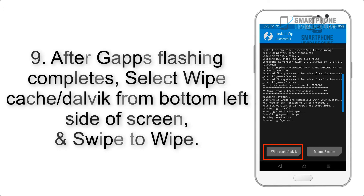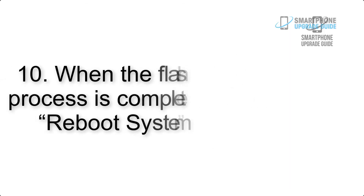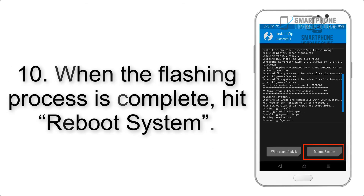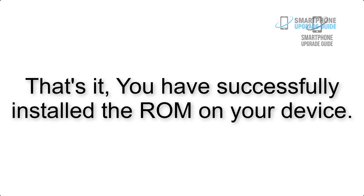Step 8: Flash the GApps zip package in the same manner. Step 9: After GApps flashing completes, select Wipe Cache and Dalvik from the bottom left side of the screen and swipe to wipe. Step 10: When the flashing process is complete, hit Reboot System. You have successfully installed the ROM on your device.